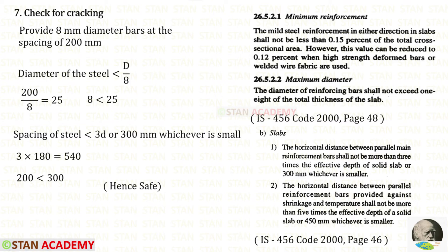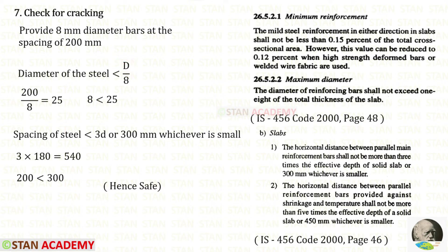Now let us apply the check for cracking. There are three conditions. First, we have to check for minimum area — we have already done that in the previous step. Second, we check the diameter of the bar. From page number 48 of the code book, the diameter of the reinforcing bars shall not exceed one-eighth of the total thickness of the slab. 200 upon 8 equals 25. Our rebar size is 8, which is less than 25, so it is safe.